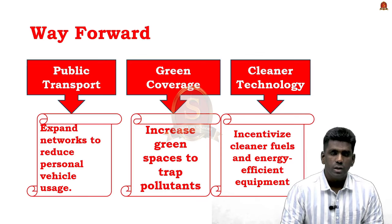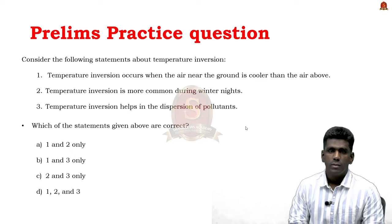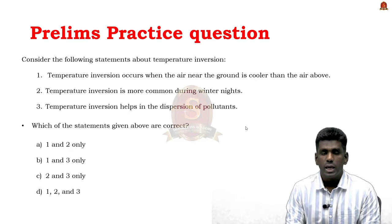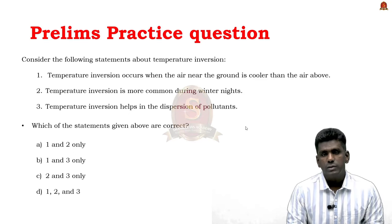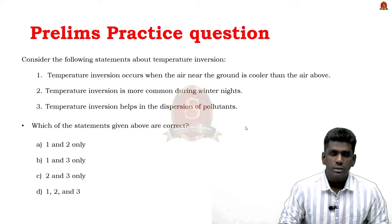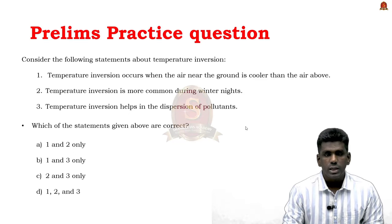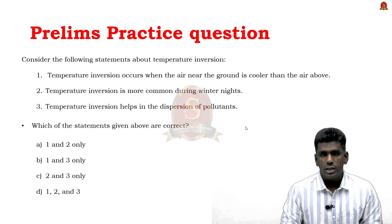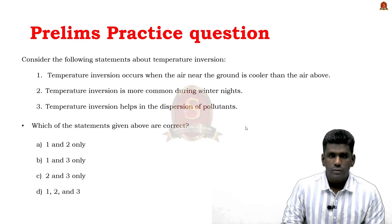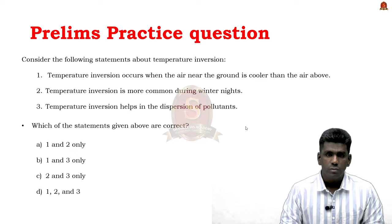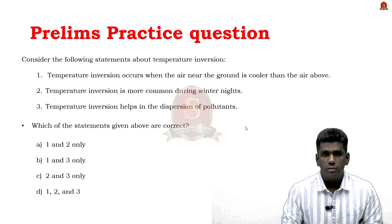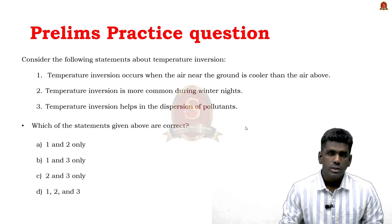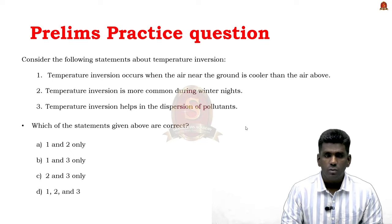MCQ on temperature inversion: Statement 1 — temperature inversion occurs when air near the ground is cooler than air above — is correct, as this is the reversal of normal conditions. Statement 2 — temperature inversion is more common during winter nights — is also correct. Statement 3 — temperature inversion helps in dispersion of pollutants — is incorrect; it actually leads to more concentration of pollutants. Correct answer: Option A, one and two only.